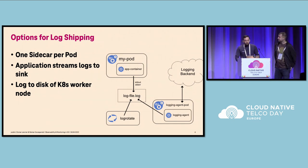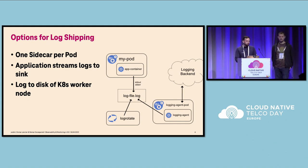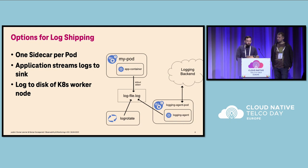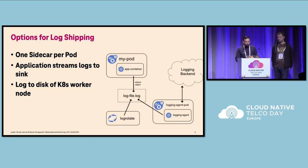So for log shipping in Kubernetes there's not a lot of ways. The picture on the slide is taken directly from Kubernetes documentation. Basically you have the option to run one sidecar per pod, collect the logs there, and send it to some sink. It's also possible that the application itself streams to something — in our case Elasticsearch — though unfortunately that's not the case everywhere. And of course you can also log to disk directly on the worker node, collect the data there, and send it to some logging backend.